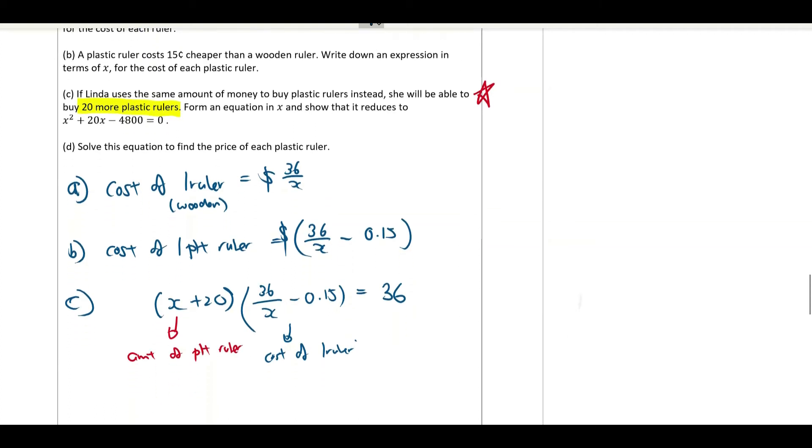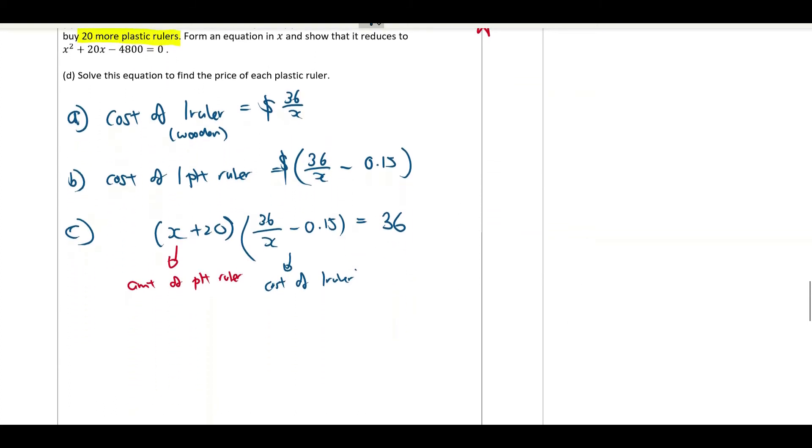So amount of ruler multiplied by the cost of one ruler is equal to the total amount spent. So now let's distribute X times 36 over X. For the sake of simplicity, I will just write this down first.